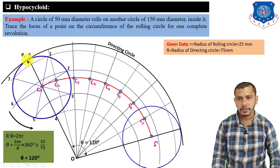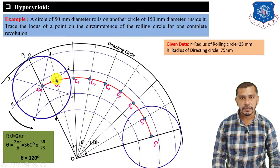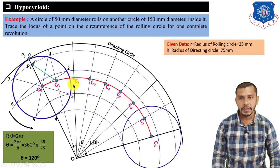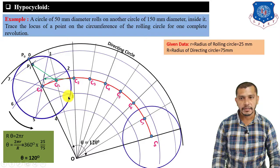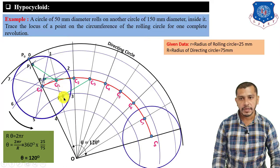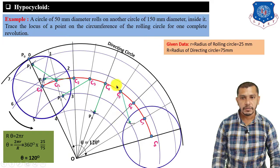Mark P0. The radius of the rolling circle is C0 to P0 = 25 mm. Take center at C1, give an arc on the arc passing through the first division — this is P1. Take center at C2, arc on the second division arc (in anticlockwise direction, since the circle rolls anticlockwise) — P2. Center at C3, arc on third division — P3. Center at C4, arc on fourth division — P4. Center at C5, arc on fifth division — P5. Center at C6, arc on sixth division — P6.